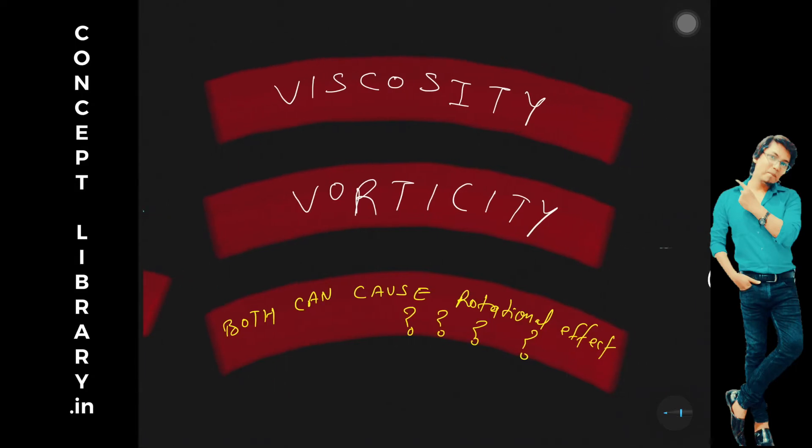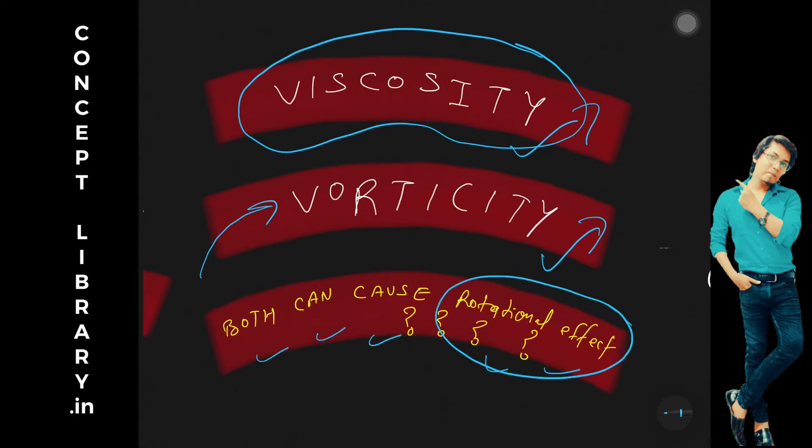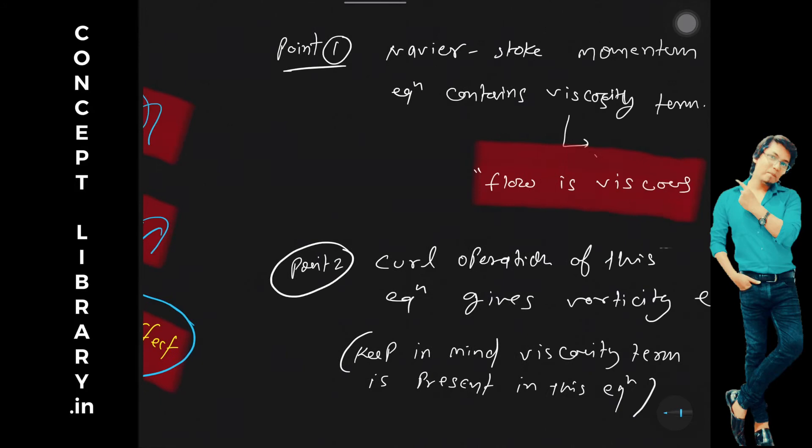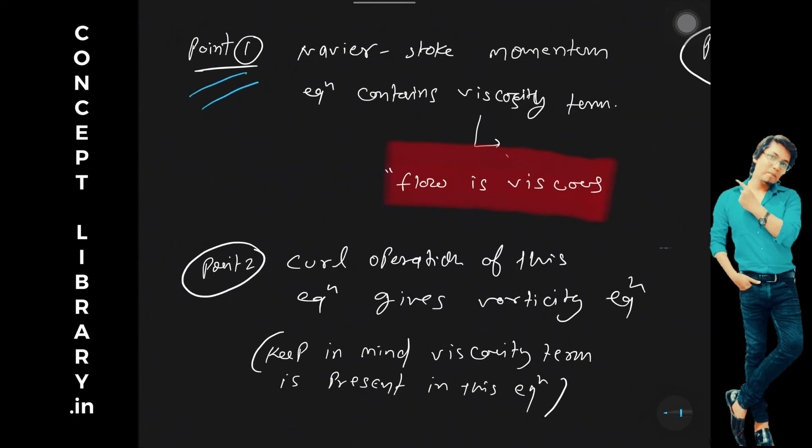Viscosity and vorticity, we have two things. Mostly people used to think like viscosity is causing the rotational flow, right? But at the same time we used to miss there is something called this vorticity also. So you can think both can cause rotational effect.